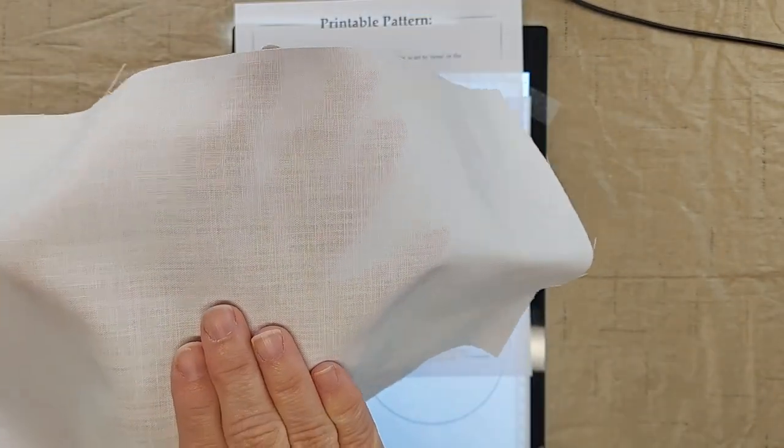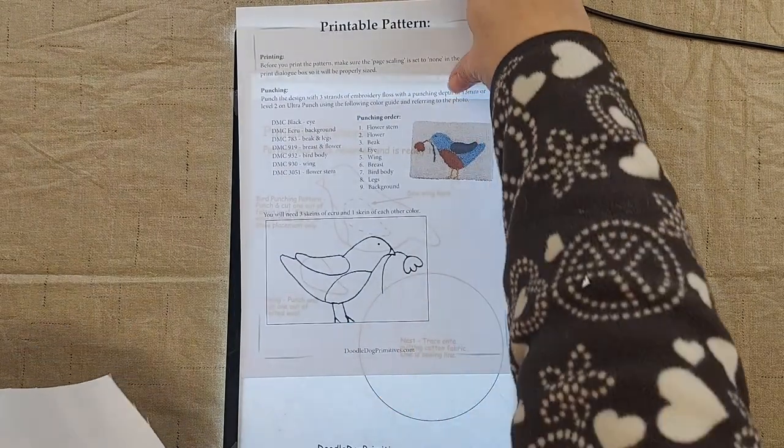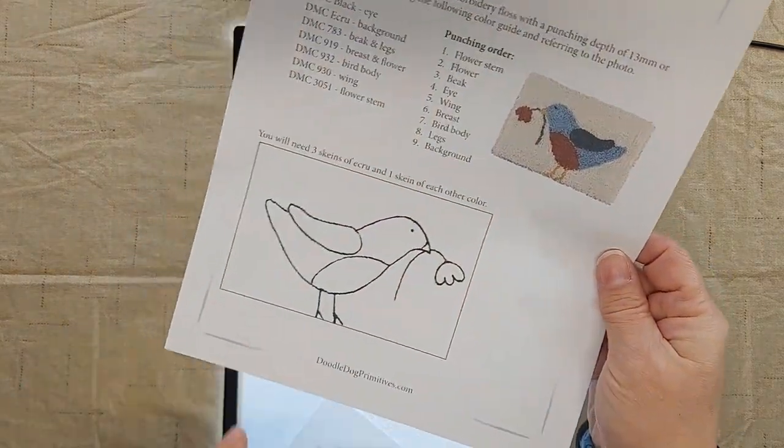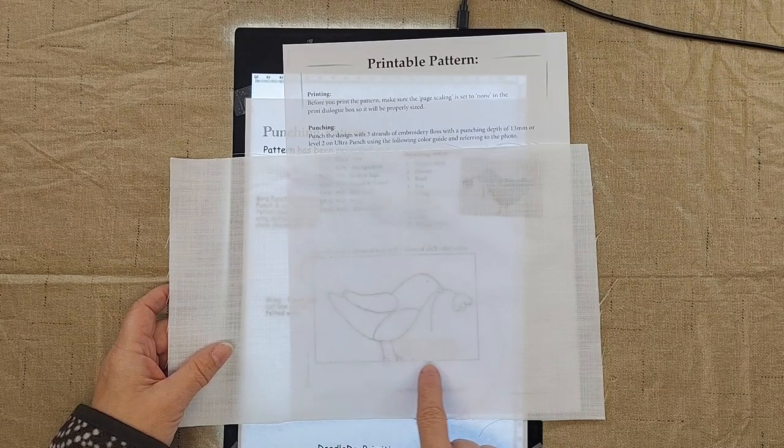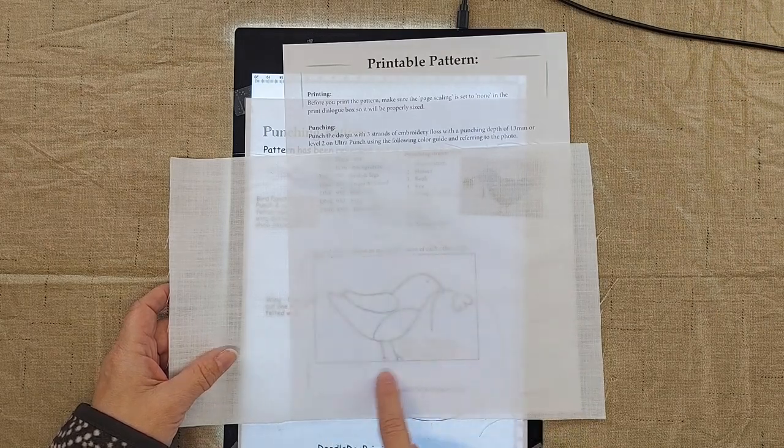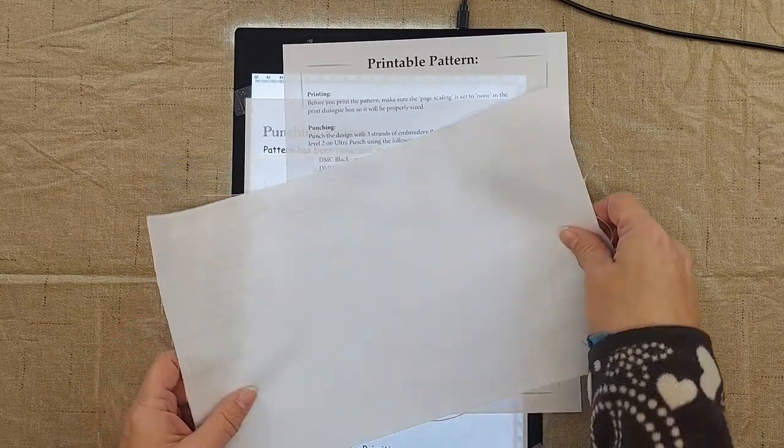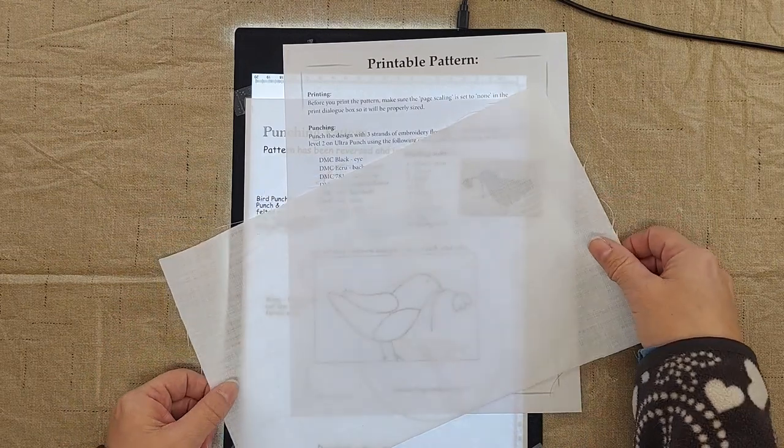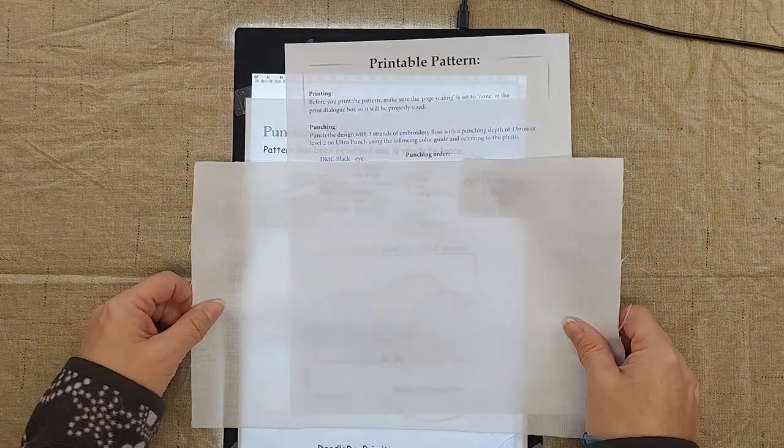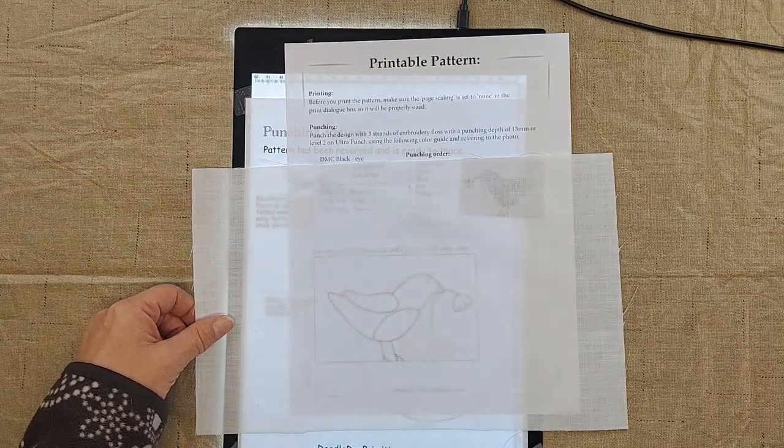When you're tracing a pattern like this bird that has the rectangle around it, you want to try to line up the line on the pattern with the woven threads. You don't want to have it be off like this. You want to have it be square with the fabric.